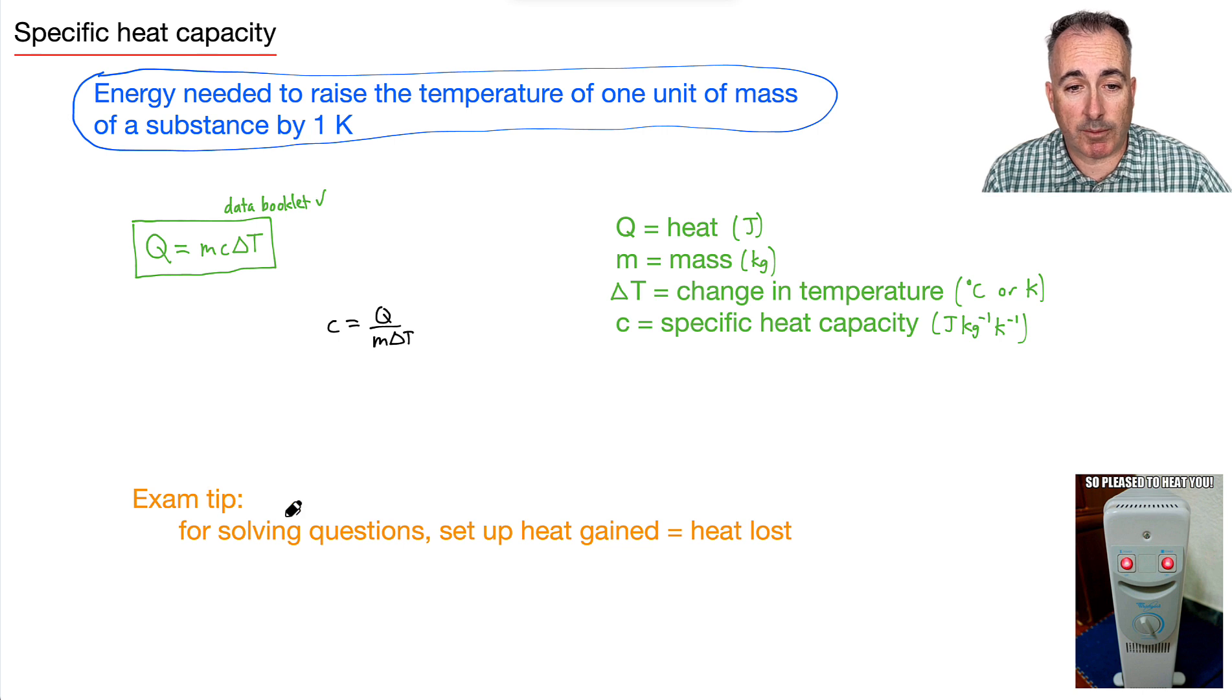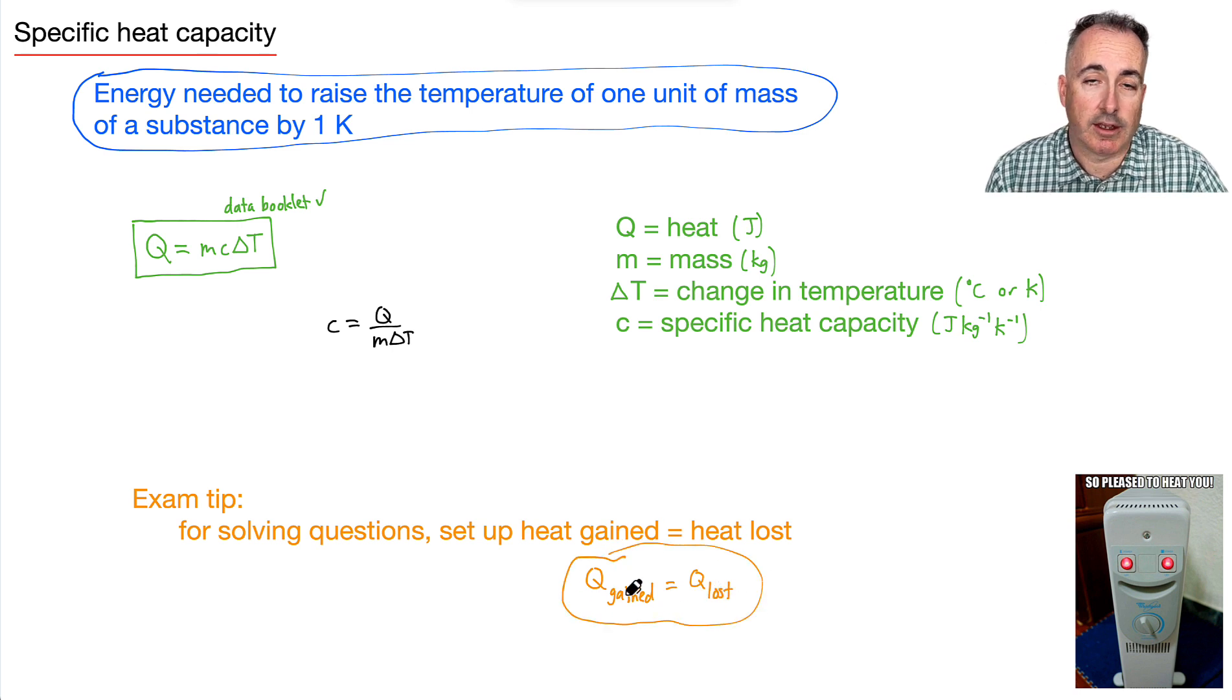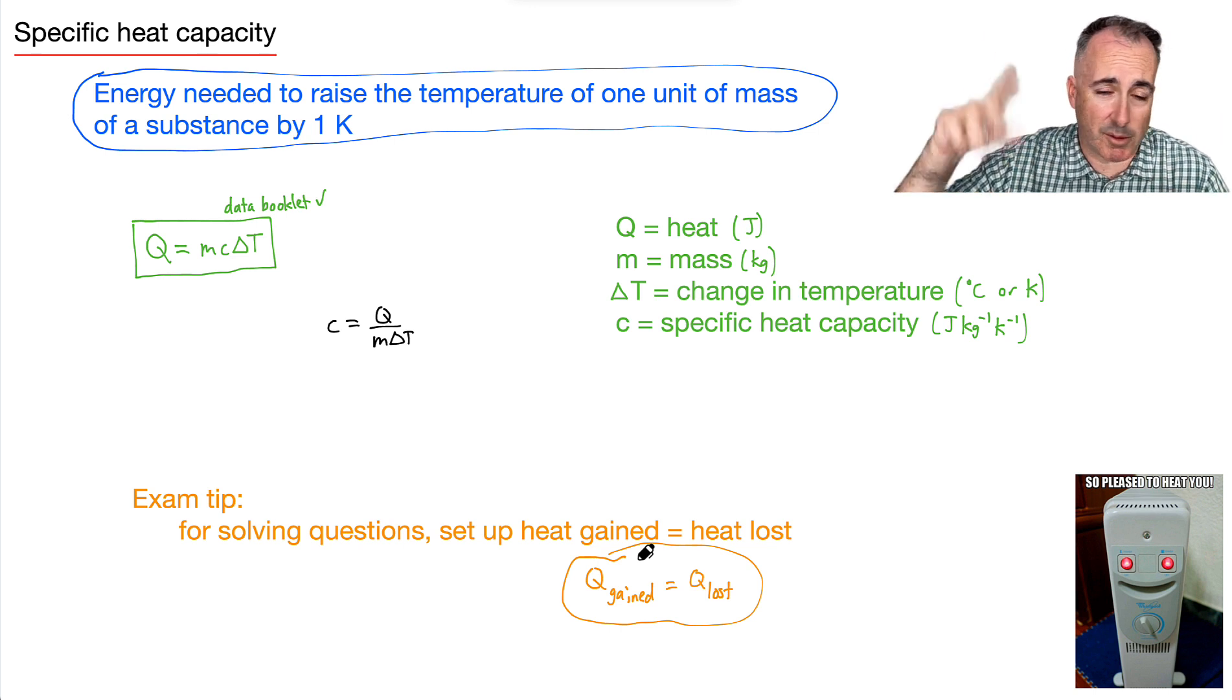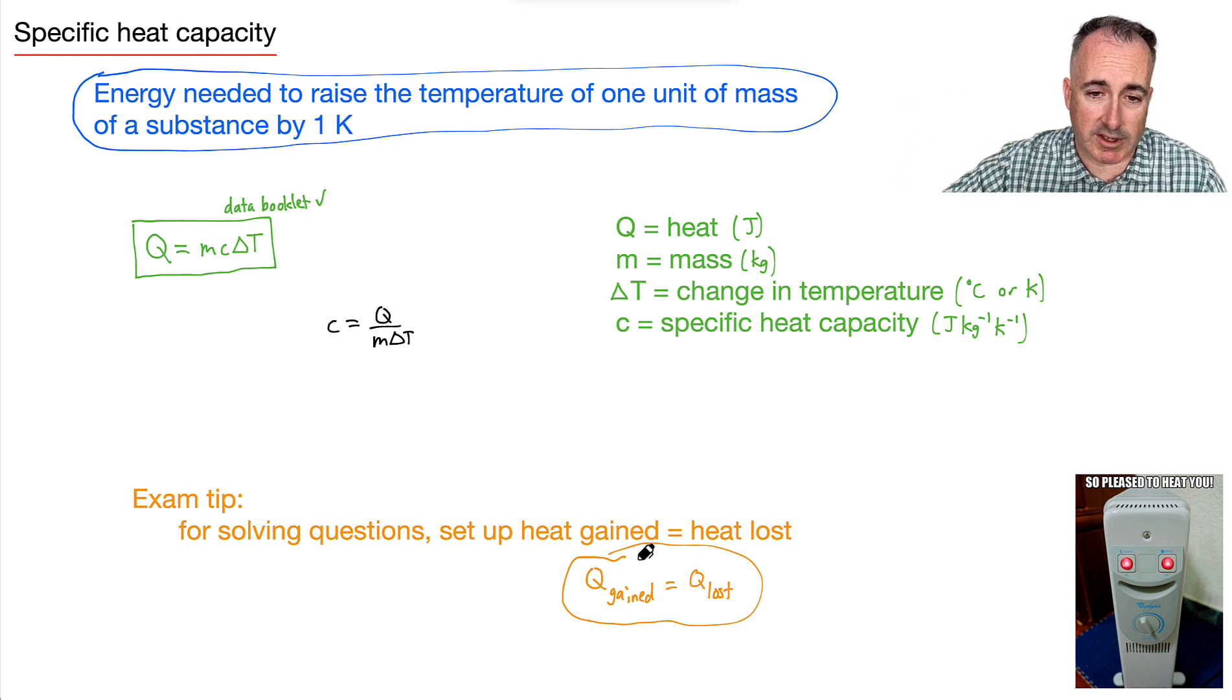And here's a really important exam tip: when I'm solving questions, I just like to set up left side and right side, who gained energy and who lost energy. In other words, who went up in temperature, who went down. And I always just write Q gained equals Q loss. And that means I set up a little mini equation then for everyone who is gaining energy, I put them on the left side. Anyone who's losing energy, I put them on the right side. I'll set up an MC delta T for each side.